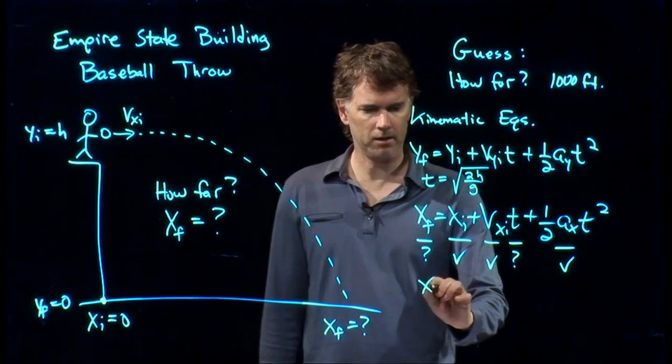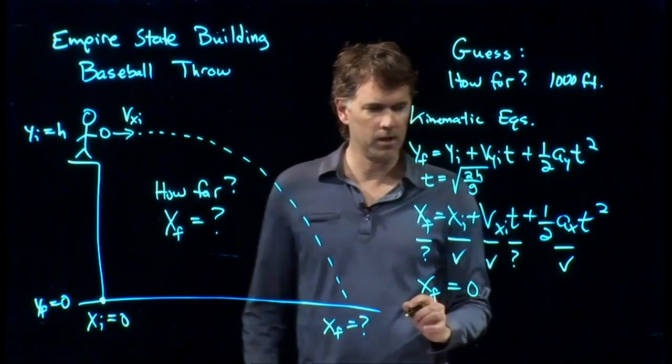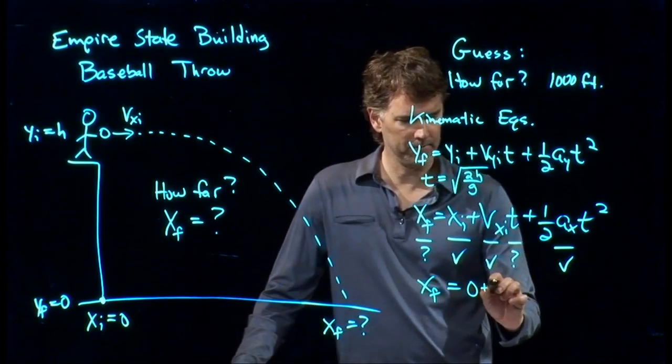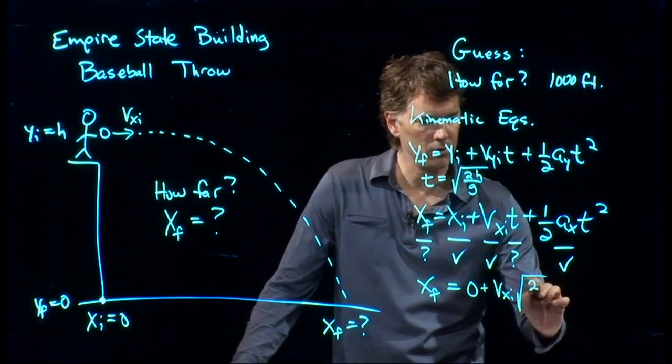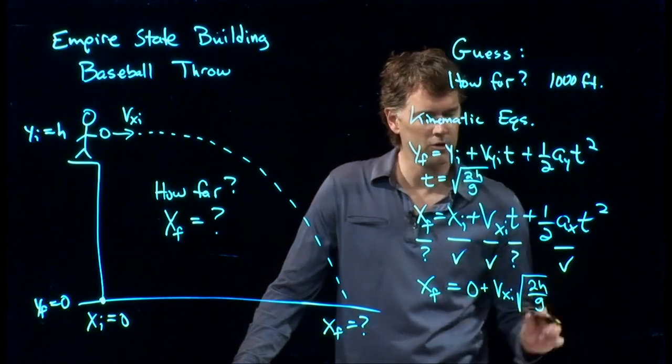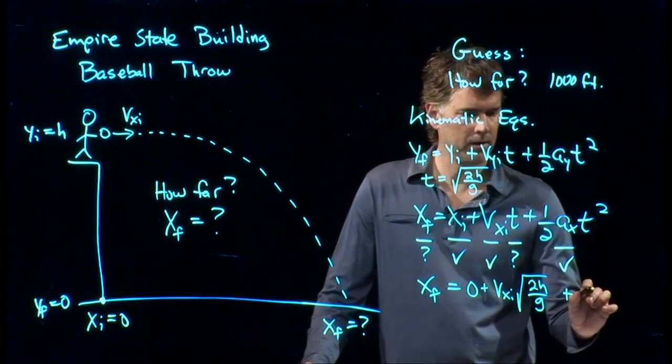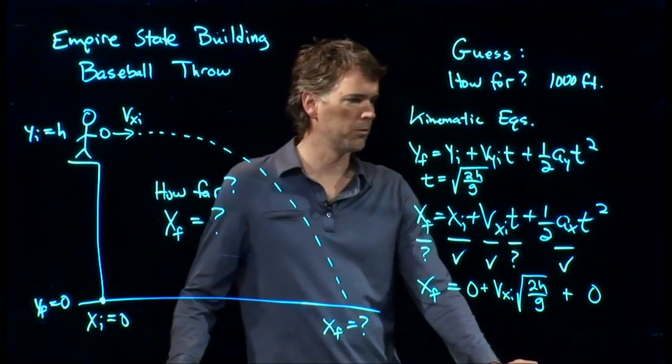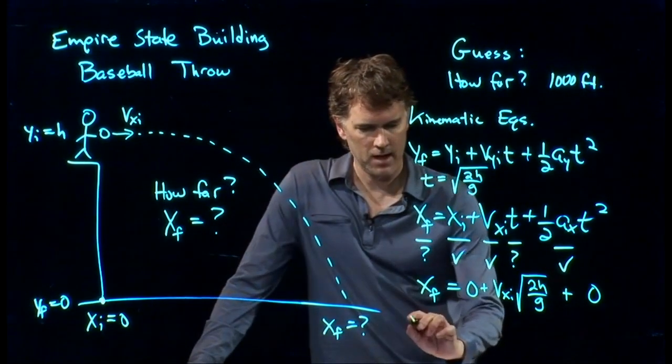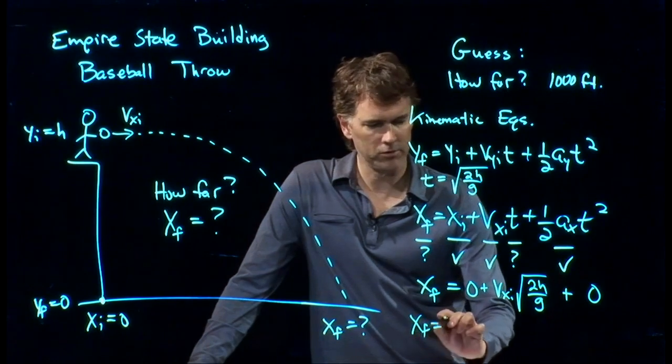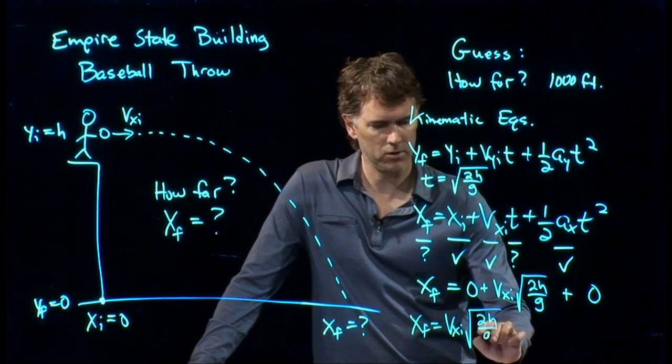Aha! So now I can just plug all that into this equation right here. X final equals X initial, we said, was zero. V X initial, we give you. Square root of 2H over G. And T is now square root of 2H over G. A sub X is zero. That whole term goes away. And so now we have our solution. X final equals V X initial, square root of 2H over G.